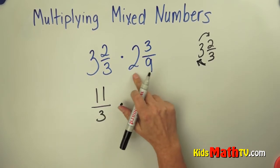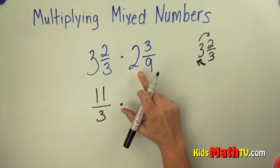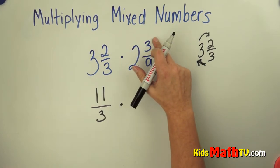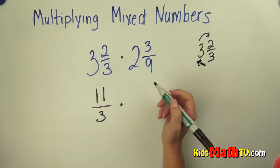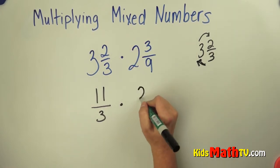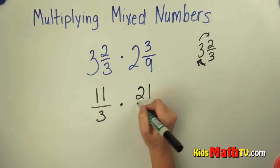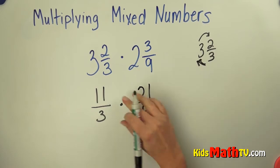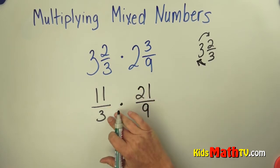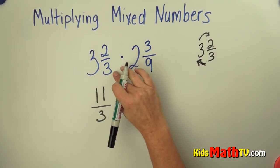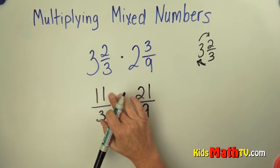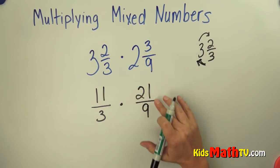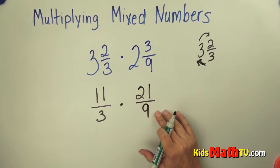Then we do the same thing for the second number. 9 times 2 is 18, and 18 plus 3 more is 21, over the denominator 9. So we've renamed 3 and 2 thirds into 11 thirds, and 2 and 3 ninths into 21 over 9.